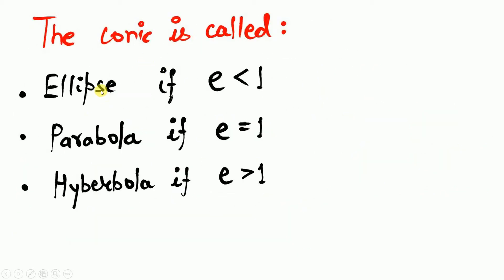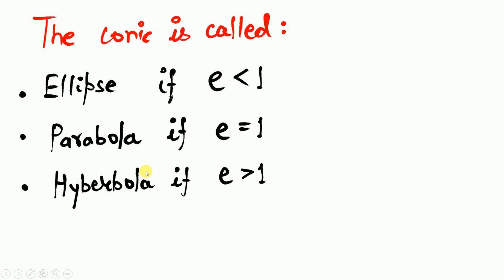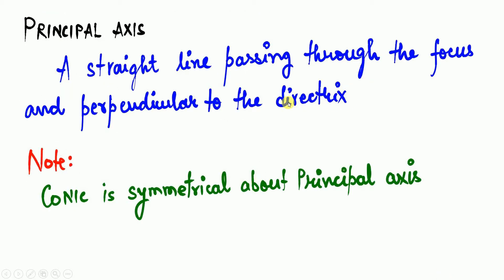Based on eccentricity: the conic is called an ellipse if eccentricity is less than one; a parabola if eccentricity is equal to one; and a hyperbola if eccentricity is greater than one. So using B² − 4AC or the value of eccentricity e, you can determine whether the conic section is an ellipse, parabola, or hyperbola.